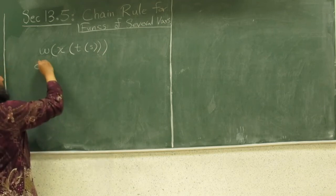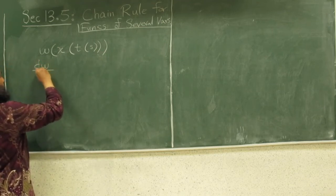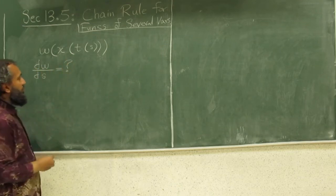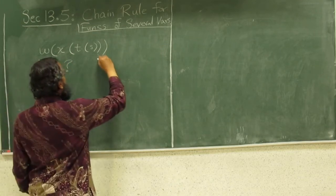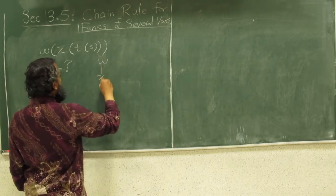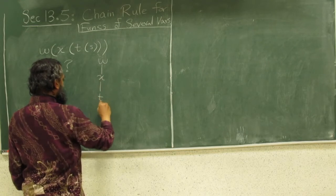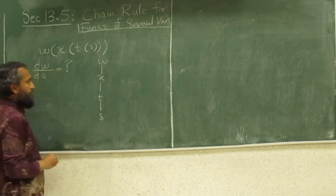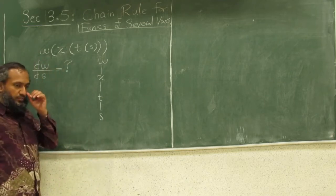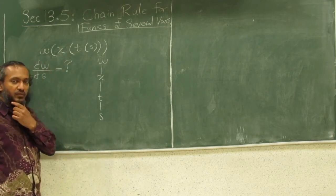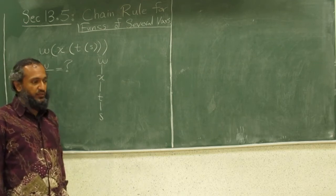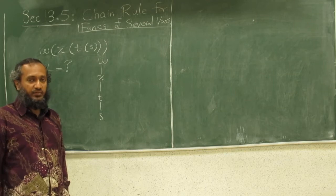If somebody asks you what is dw/ds, how do we compute it? You can think of a chain diagram: w is a function of x, which is a function of t, which is a function of s. Chain rule is one of those topics in calculus 1 which is one of the easiest topics — in fact, it is something you have seen since the early days of your childhood.